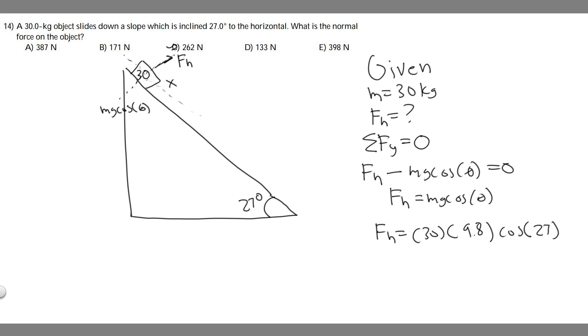So basically just plug this in: 30 times 9.8 times the cosine of 27, and you're gonna find it equals 261.955.